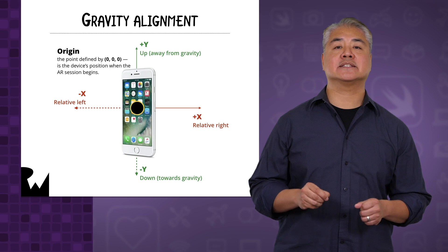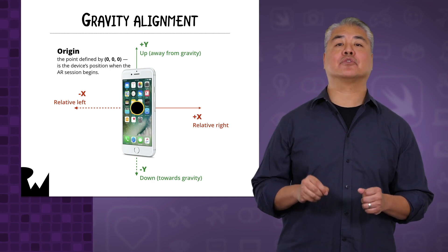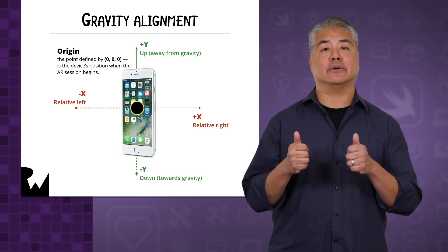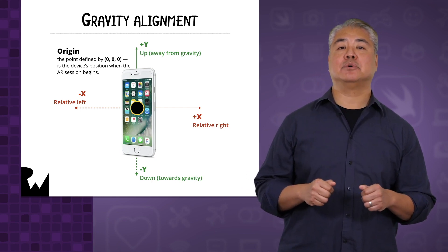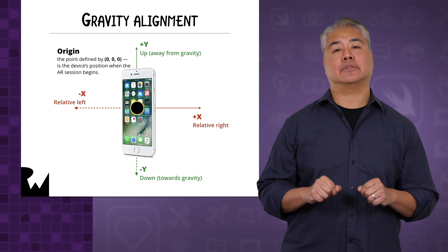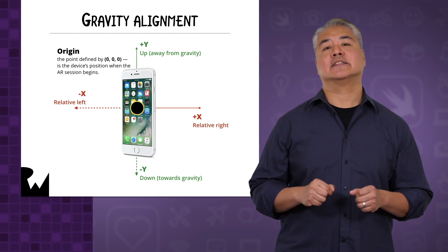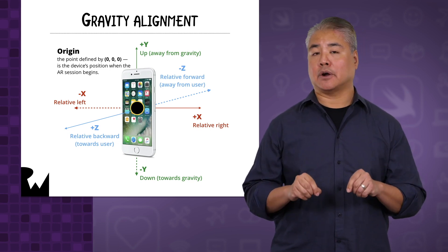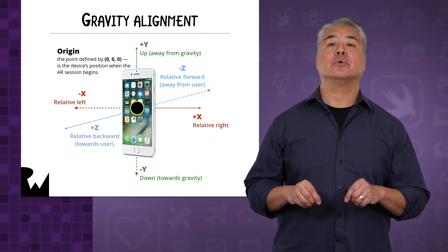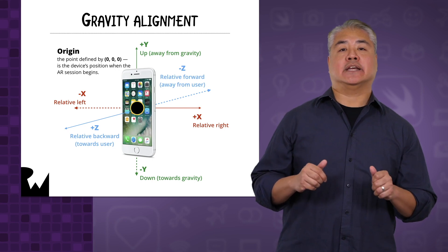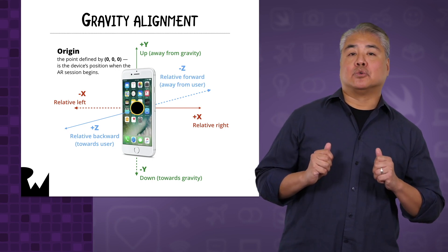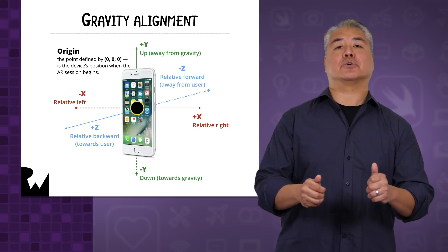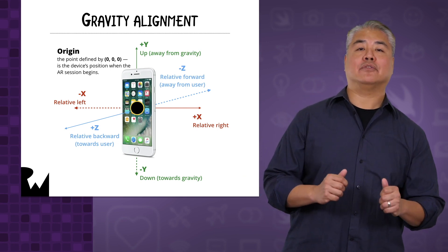The Y axis is defined by the force of gravity, with Y increasing as you move upward or away from the Earth and decreasing as you move downward or towards the Earth. And finally, the Z axis is defined by the position of the front and back of the device at the start of the ARKit session, with Z increasing as you move towards the front of the phone or towards the user and decreasing as you go towards the back of the phone or away from the user.